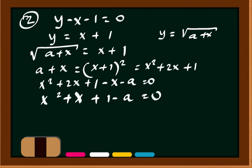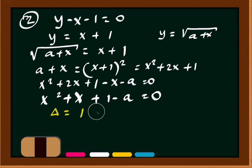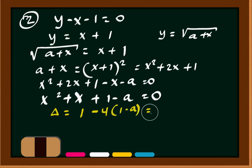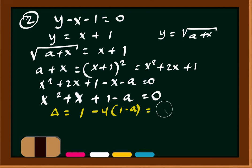Calculating delta for this equation: delta equals 1 minus 4 times (1 minus a), which simplifies to delta equals 4a minus 3.